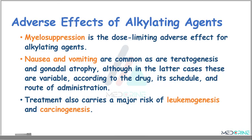Some of the important adverse effects of alkylating agents are myelosuppression or bone marrow suppression, which is the dose-limiting adverse effect for most of these agents. We also have nausea and vomiting, which are common, as well as teratogenesis and gonadal atrophy, although the latter effects are variable according to the drug, its schedule, and the route of administration. The treatment also carries a major risk of leukemogenesis and carcinogenesis.